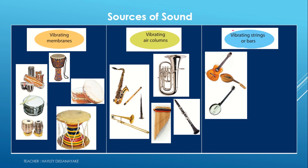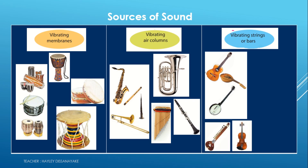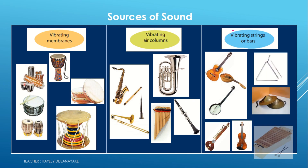The third type is objects which produce sound by vibrating strings. On the other hand, the sitar, sarangi, triangle, and similar instruments produce their sound by vibrating metal rods.